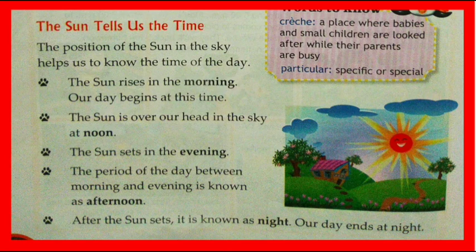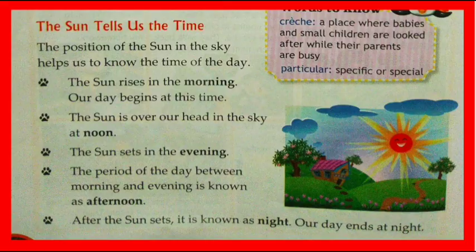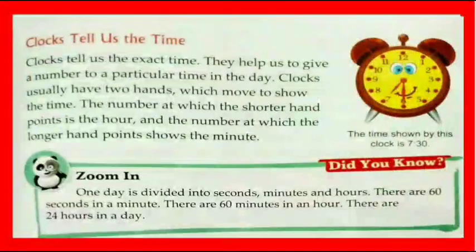The sun rises in the morning — our day begins at this time. The sun is over our head in the sky at noon. The sun sets in the evening. The period of the day between morning and evening is known as afternoon. After the sunset, it is known as night. Our day ends at night.